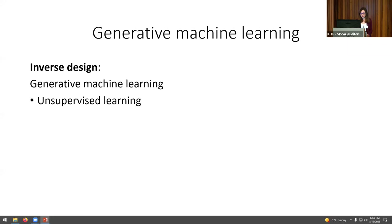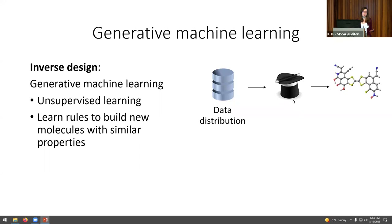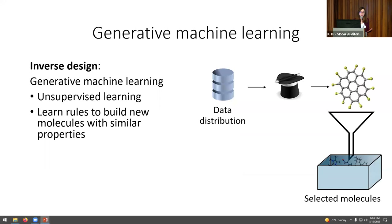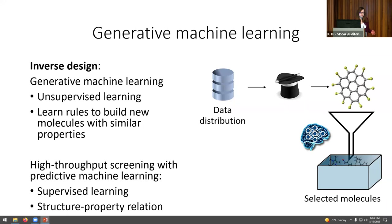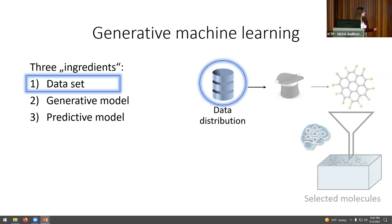One way to achieve inverse design is with generative machine learning. It's an unsupervised learning technique where the goal is to learn from a data distribution. We want to learn to build new molecules — learn the rules and apply them to generate new ones. I like to replace the model with a magic hat analogy: once trained, you can pull as many molecules out as you want. Once we've created millions of new molecules, we need high-throughput predictive techniques to screen them. The three ingredients we need are: a dataset, a generative model, and a predictive model.